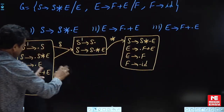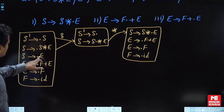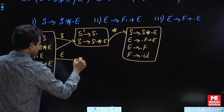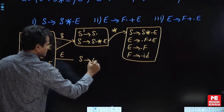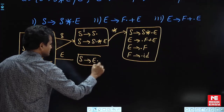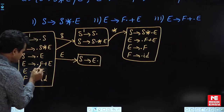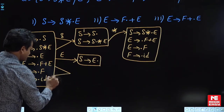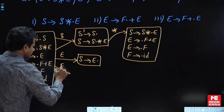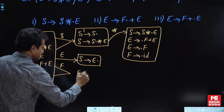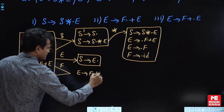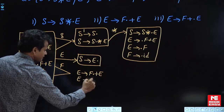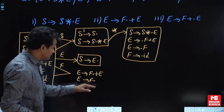Now I will write the go-to for these productions also. Go-to on E will give only one production: S'→E· — this single item, close this. These two productions have the same shift symbol, so they will move to the same state: E→F·+E and E→F·. Dot after terminal, dot of nothing — we cannot add any other productions in this state.